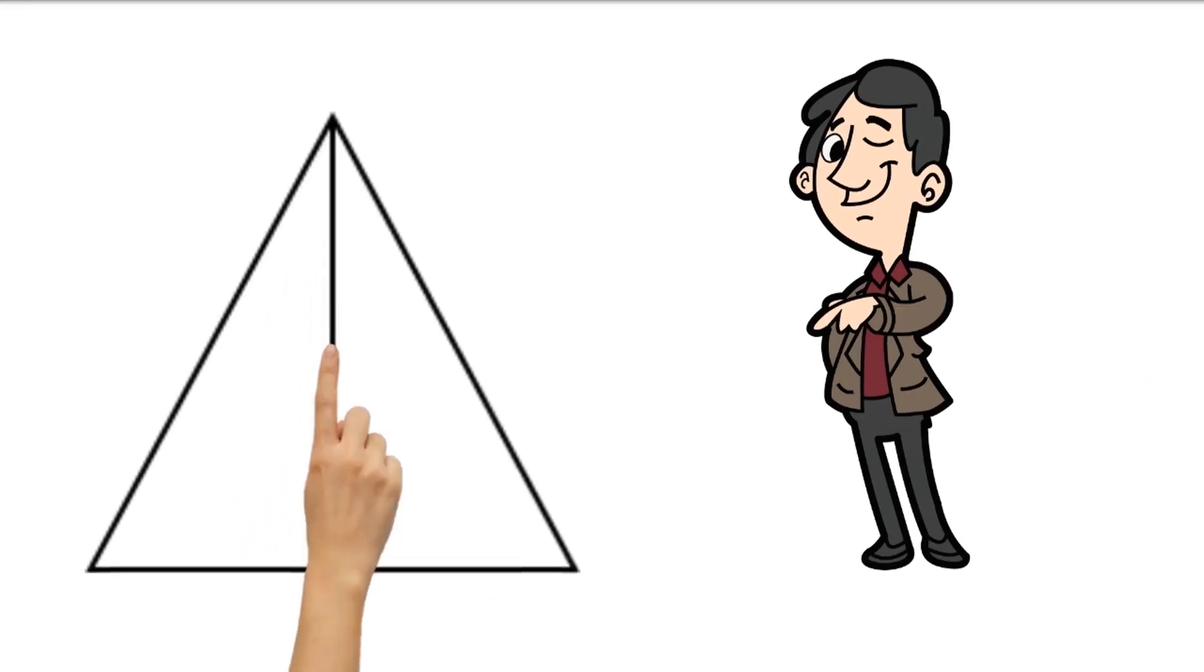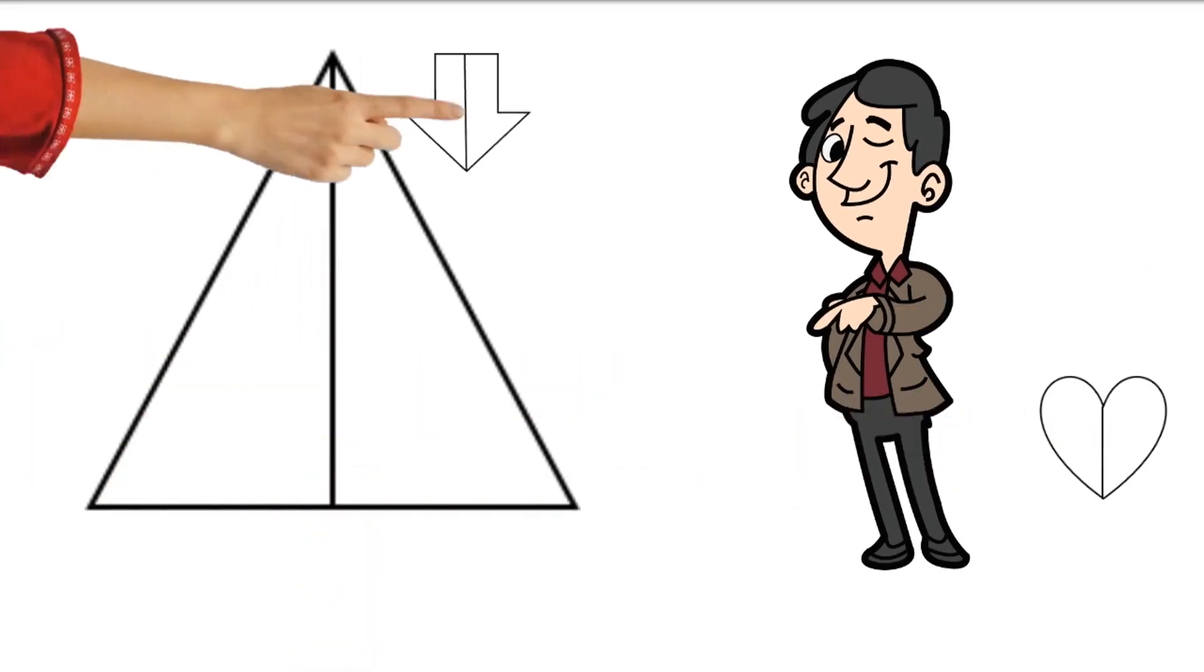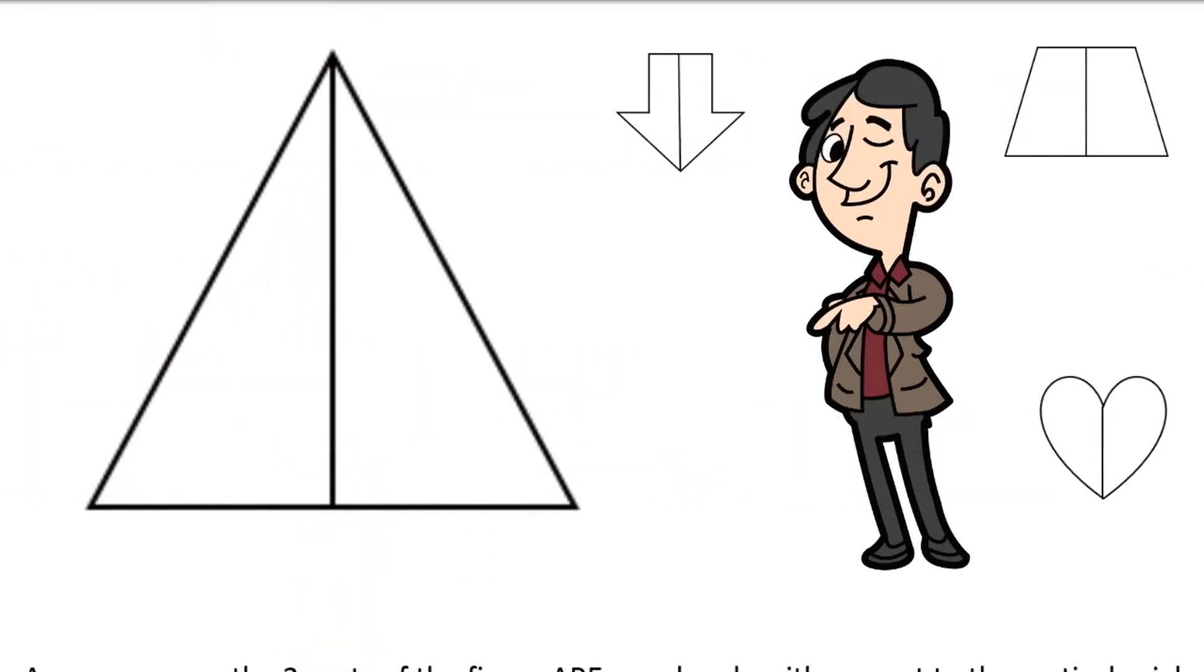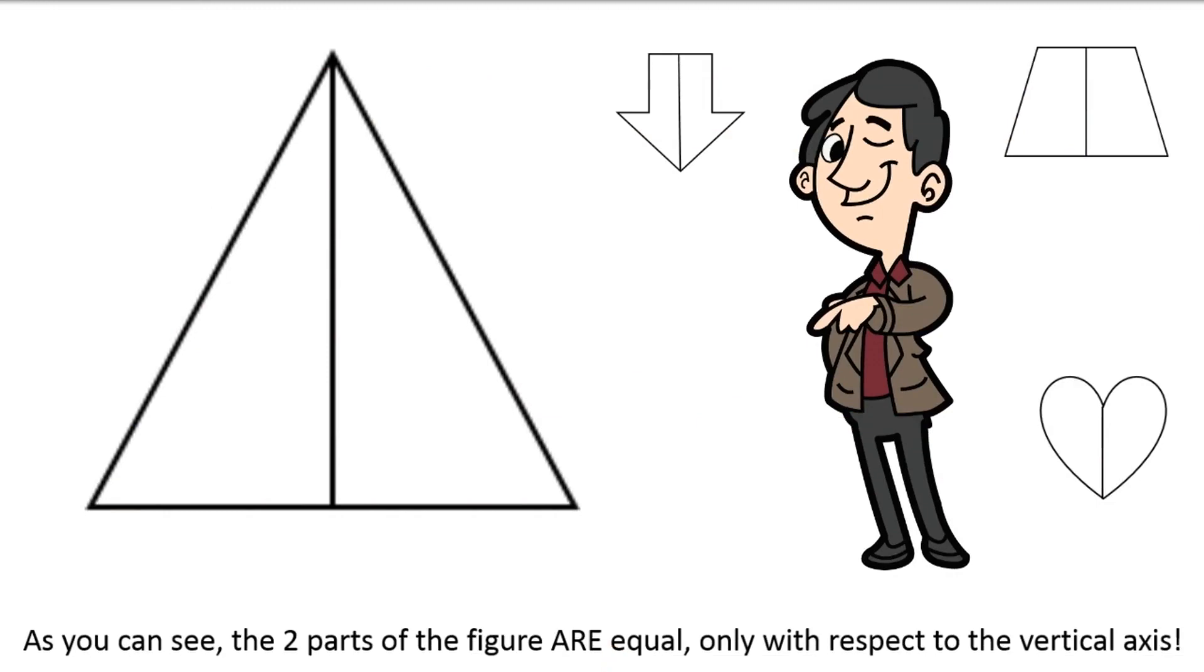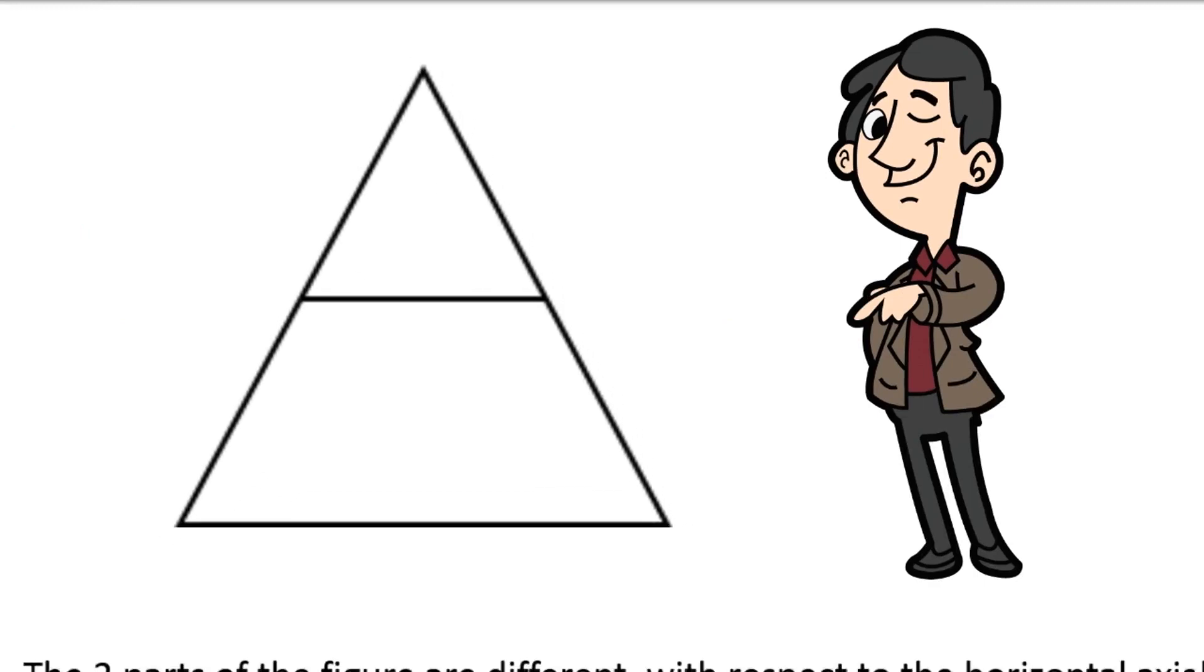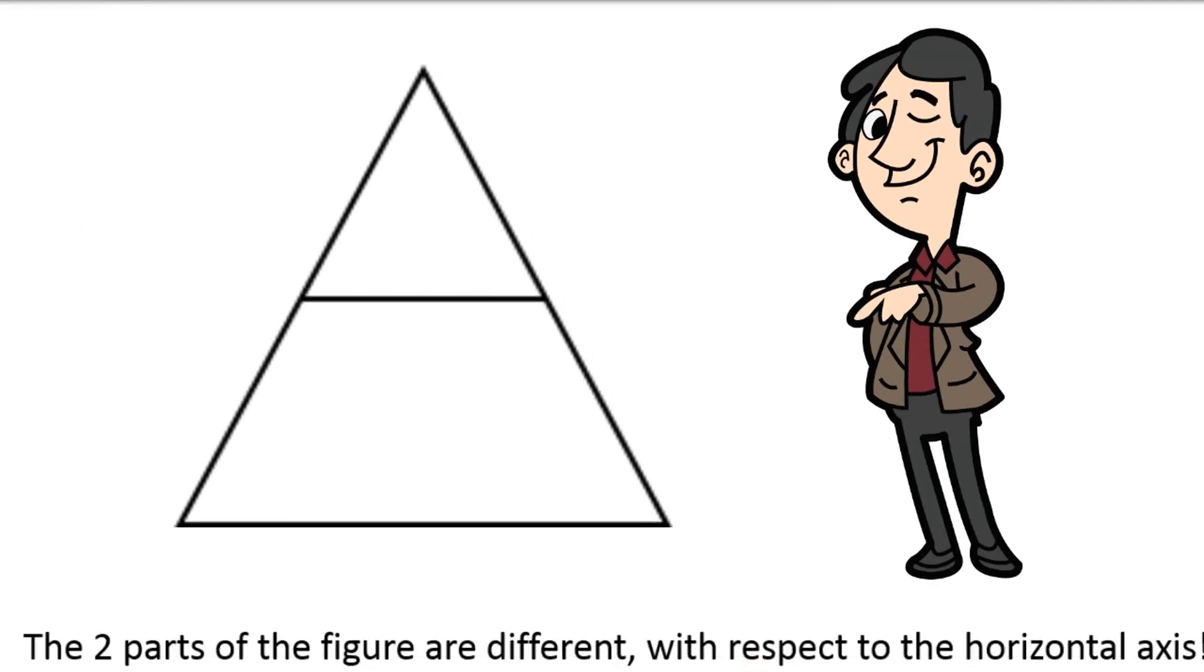As you can see, the two parts of the figure are equal, only with respect to the vertical axis. The two parts of the figure are different with respect to the horizontal axis.